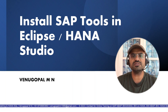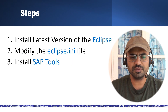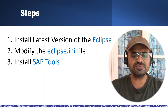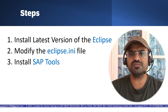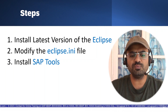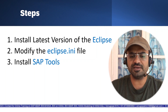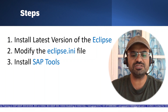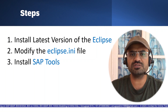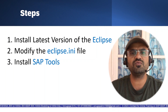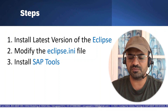As part of today's session, I will take you through detailed steps — they are very simple steps, but having better knowledge on this will help you configure Eclipse along with SAP tools, or SAP HANA Studio along with the necessary tools, on your system or laptop. There are three basic steps: first, install the latest version of Eclipse from the Eclipse official website; second, modify the eclipse.ini file; and third, install the necessary SAP tools on top of your Eclipse or HANA Studio. The procedure remains the same regardless of whatever version of Eclipse you are using.